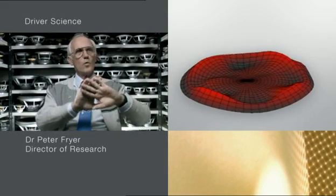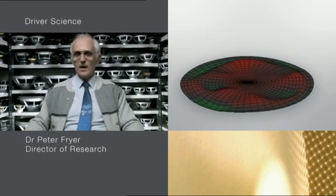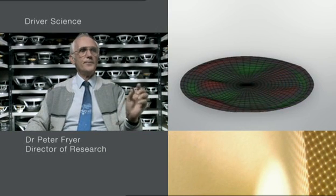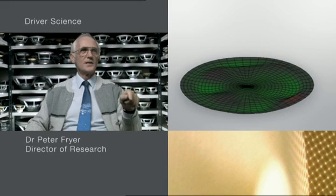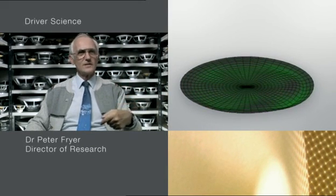With a Kevlar cone, you've got woven fibres, which are warp, weft and bias directions, and it's actually stiffer in the bias direction. If you've got just the right amount of resin in, it's exactly the right amount of increased stiffness in the bias direction, which allows the resonances in that direction to cancel out the resonances in the other direction.